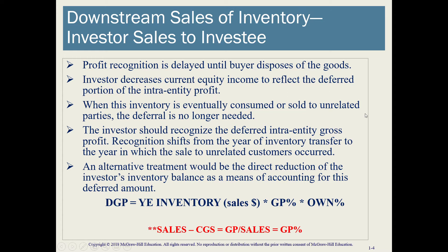With intra-entity inventory transactions, we're going to delay profit recognition until the buyer sells the goods to someone who is unrelated — not part of this intra-entity inventory sale. The reason for that is because we don't want either the investor or the investee to manipulate sales in order to inflate the balance sheet or income statement. So we want to make sure that these transactions are actually taking place at arm's length, and we're going to defer the gross profit until the sale of the goods to a third party, an unrelated party.